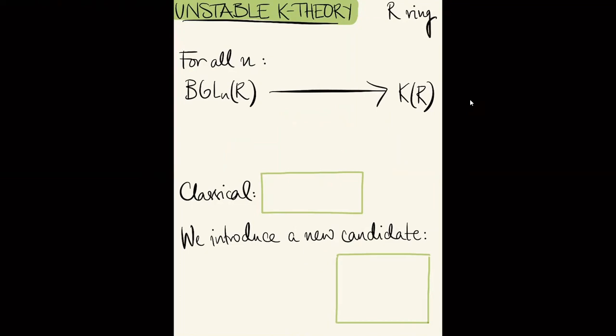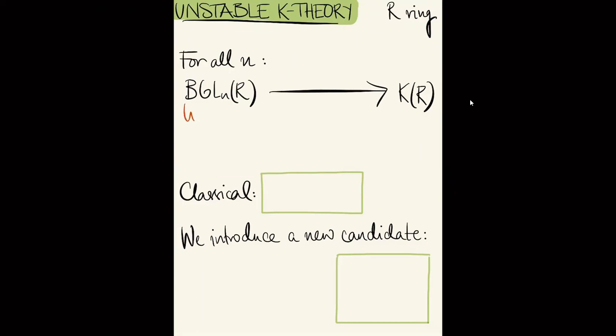I fix the ring R. As you may know, finitely generated projective modules play a crucial role in Algebraic K-Theory. For this talk I'll focus on finitely generated free modules, so I can think of the usual general linear groups over R. For all n, we have a map from the classifying space of the nth general linear group into the K-Theory space. On the left I have a space defined purely in terms of linear algebra internal to R^n — it only takes into account this fixed finitely generated free module — whereas the K-Theory space takes into account all finitely generated projective modules.